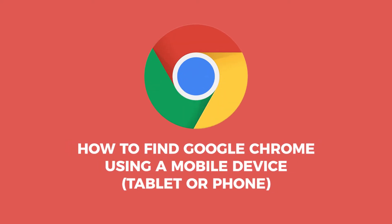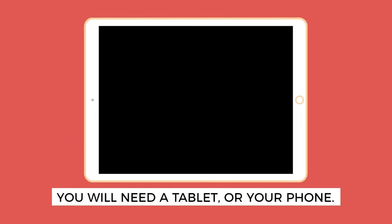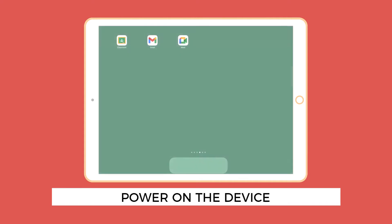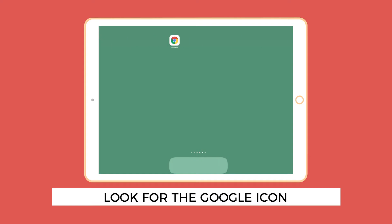How to find Google Chrome using a tablet or phone. For this task, you will need a tablet or your phone. Turn on the device. When the device is loaded, look for the Google icon.